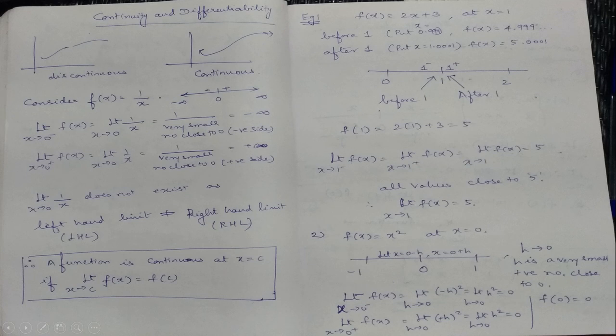A function is said to be continuous at x = c if the limit as x→c of f(x) equals f(c) — the limit equals the value of the function at c. f(c) represents the value of the function at c. Continuity is always discussed at a particular point x = c. This is the definition of continuity.